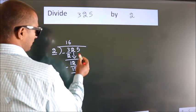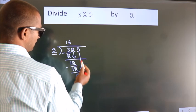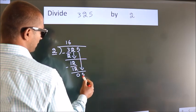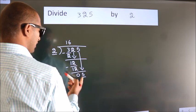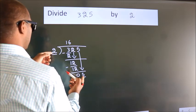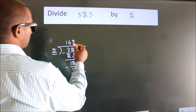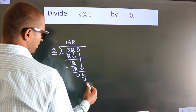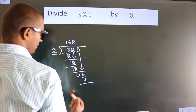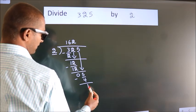After this, bring down the beside number. So 5 down, so 5. A number close to 5 in the 2 table is 2 times 2, which is 4. Now we subtract. We get 1.